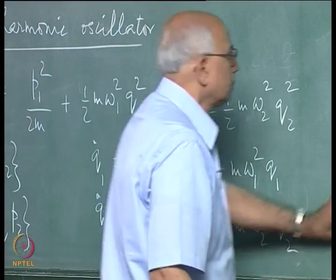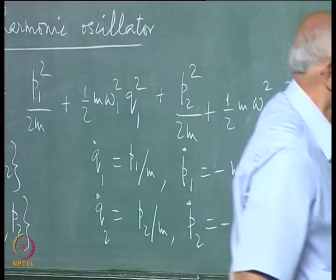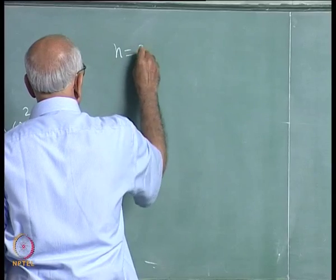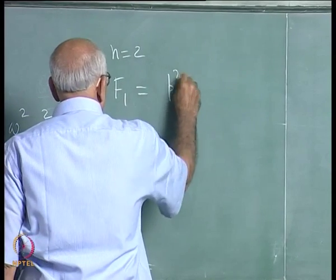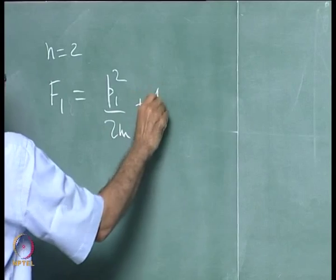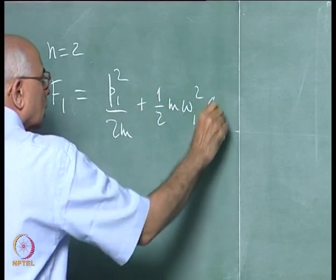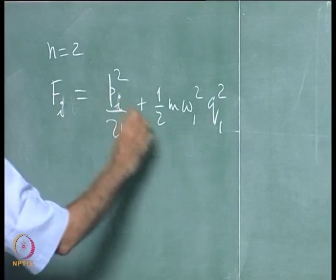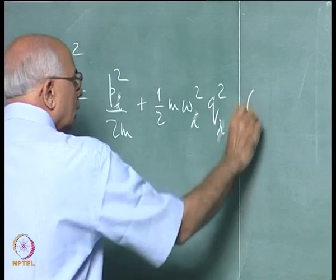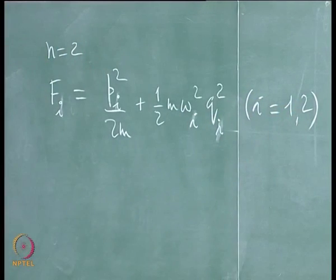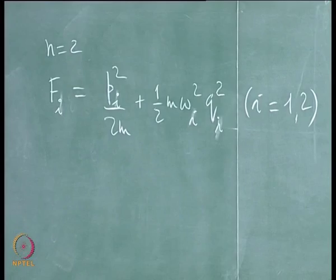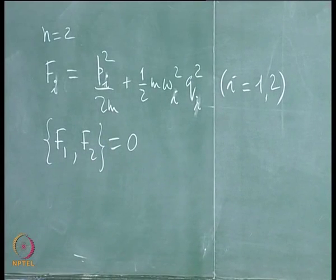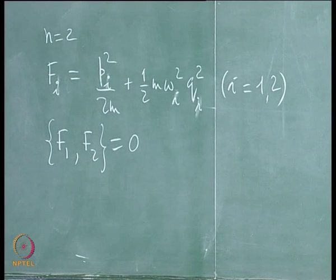Formalizing this: n=2, F1 = p1²/2m + ½mω1²q1², and in general fi = pi squared over 2m plus one-half m ωi squared qi squared for i=1 or 2. We guarantee {F1, F2}=0, hence the system is completely integrable.